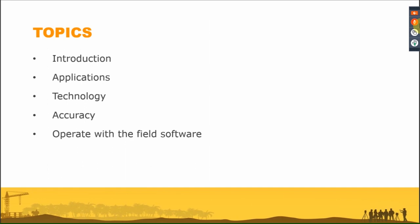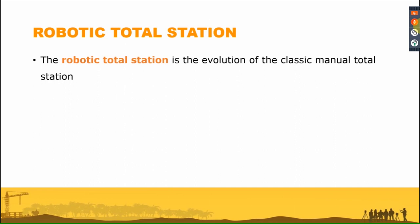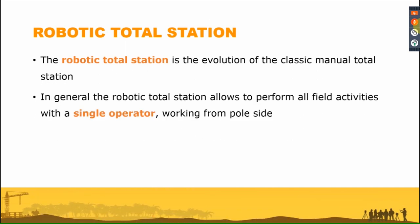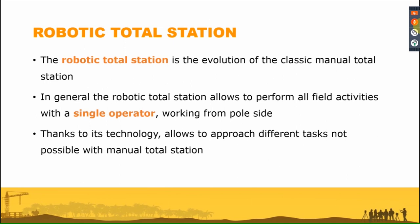The robotic total station is, as probably all of you know, the evolution of the classic manual total station. With the robotic total station, in general we can do all the operations we do with a manual total station, but with a single operator working from the pole side, because the robotic total station has technologies like automatic prism search and tracking — all functions that we can trigger from the pole. So we don't need one operator on the pole and one on the total station.